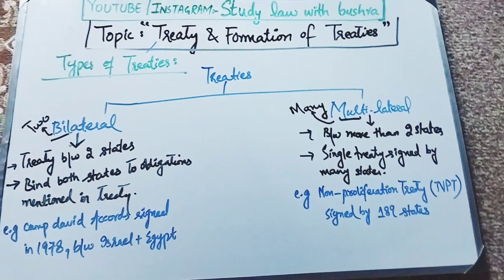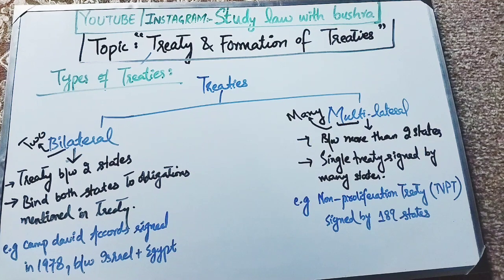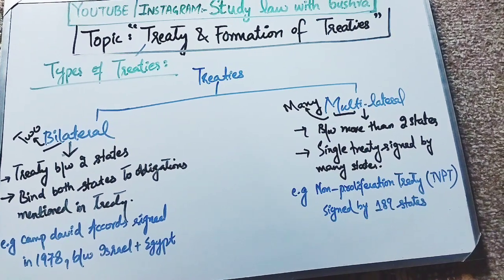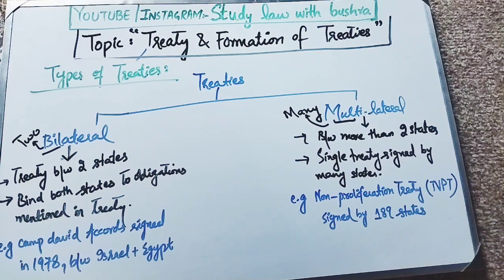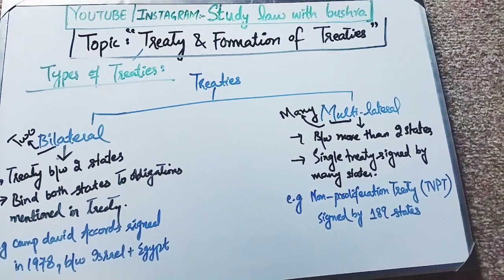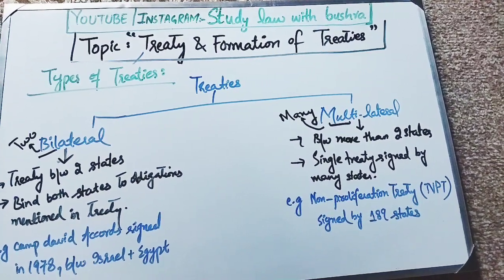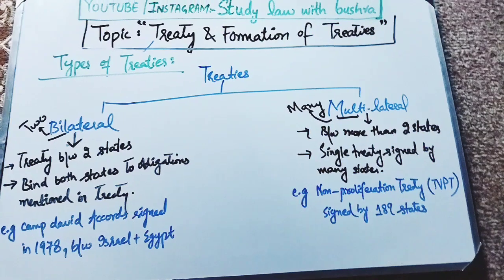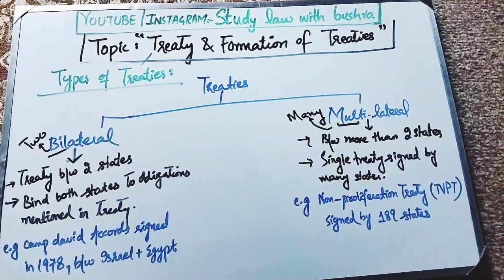Now let's look at the types of treaties. Treaties are basically categorized into two types: number one is bilateral treaty, and number two is multilateral treaty. Bilateral — the name itself indicates 'bi' means two — so any treaty that is signed between two states is called a bilateral treaty. Both states are bound by the obligations and terms and conditions mentioned in that treaty, and they must fulfill their duties accordingly.